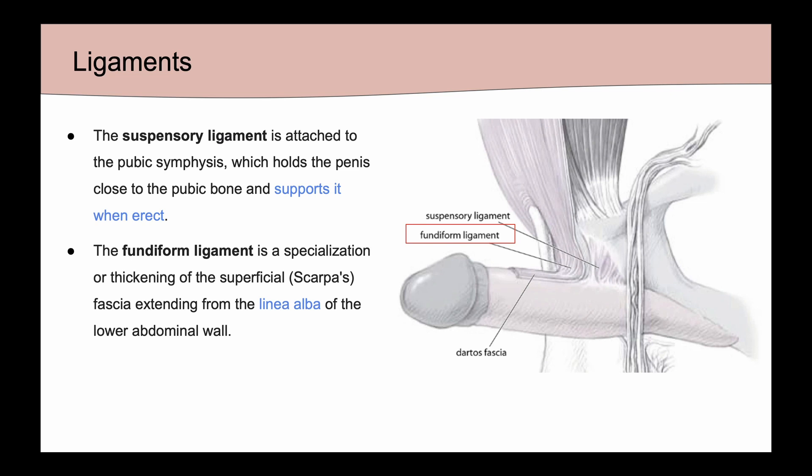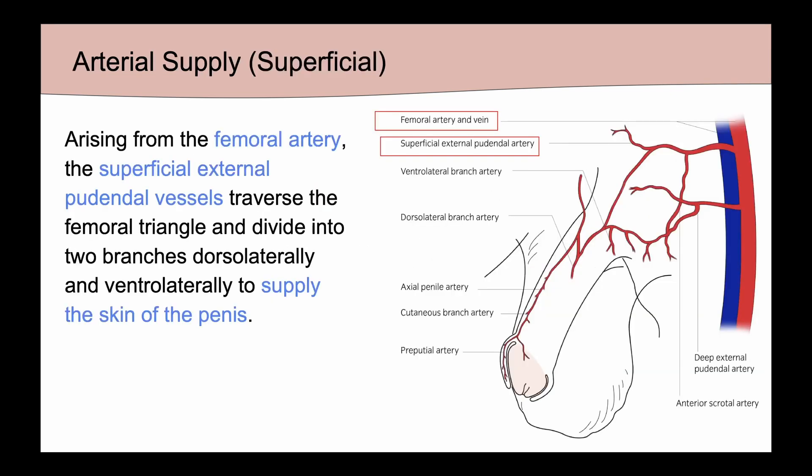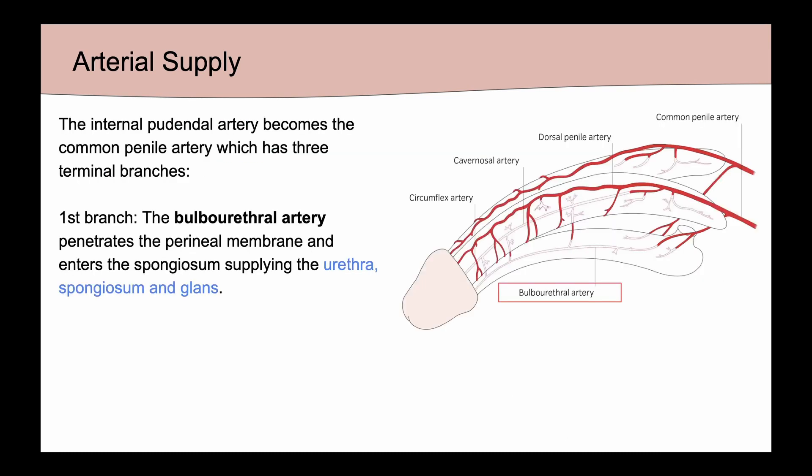The arterial supply for the superficial aspects of the penis arises from the femoral artery and branches to become the superficial external pudendal vessels. These vessels traverse the femoral triangle and ultimately supply the skin of the penis. The internal pudendal artery then becomes the common penile artery.